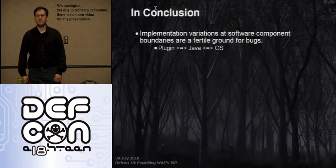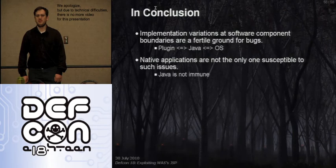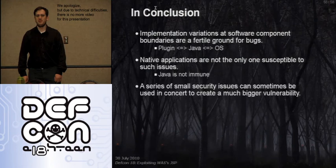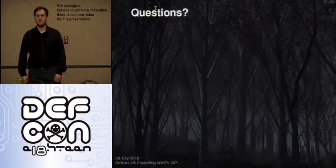In conclusion, any time you're dealing with a barrier between one implementation of a specification and another implementation — whether it's UTF-8, HTTP, or whatever — this is a really great place to look for bugs. In this case we found bugs between the plug-in and Java, and then between Java and the OS. The same sort of things happen in managed environments like Java and .NET. What I really like about this is that you have a small series of low or medium vulnerabilities that individually never get fixed, but sometimes when you weave them all together, you can make something that really creates a big problem. Any questions?